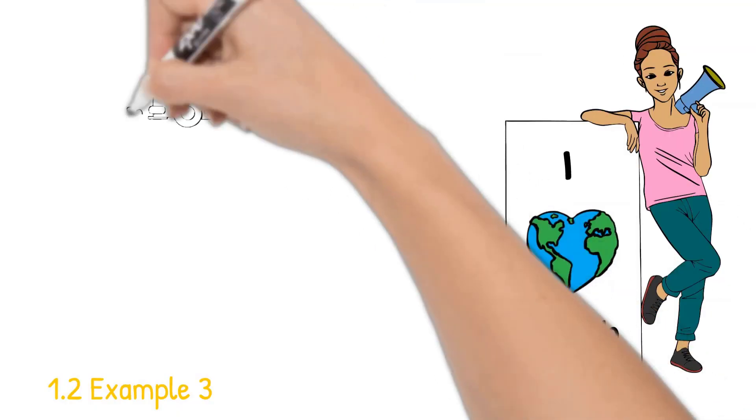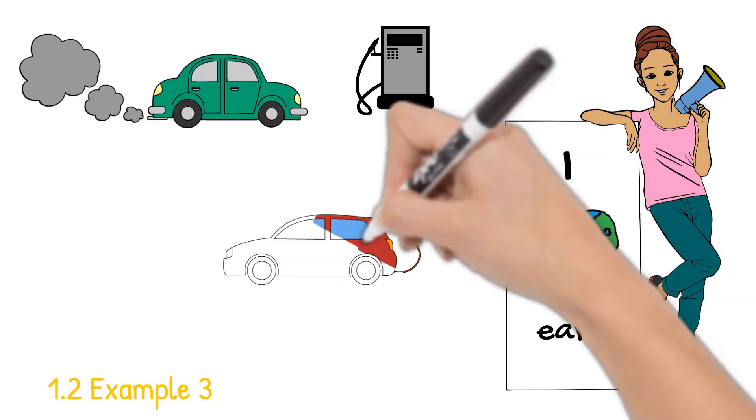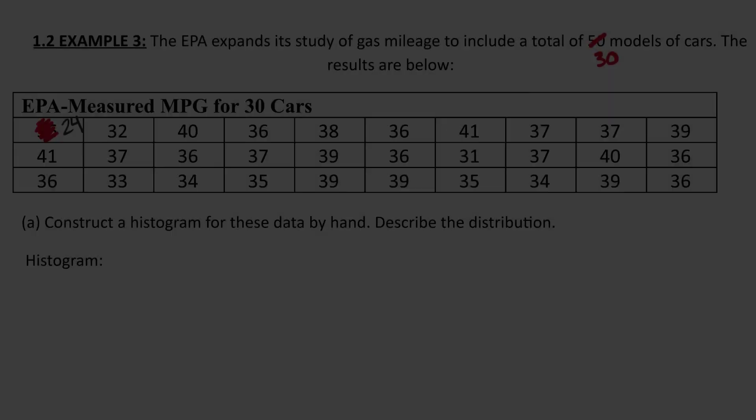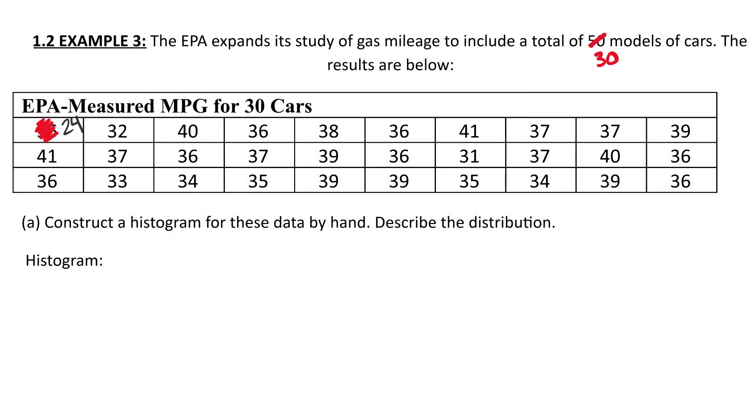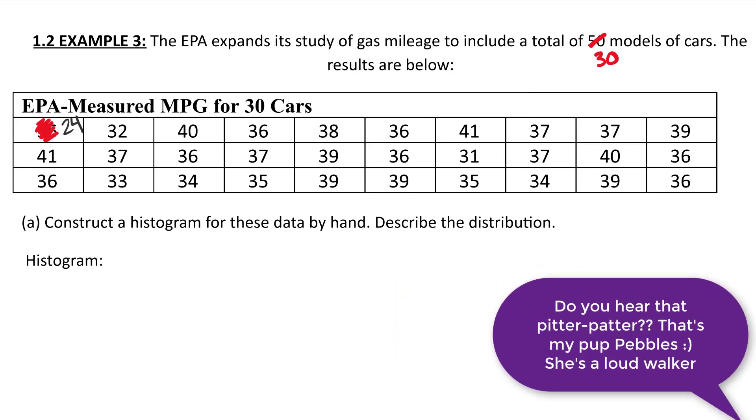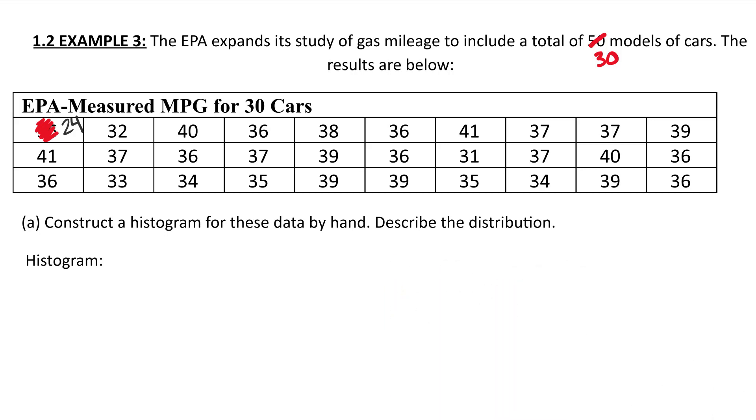So let's get into 1.2 example 3 back to the EPA data on gas mileage for cars. So now our data set is going to include 30 cars. Double check your notes. And again, that one typo carried through. Make sure that's a 24 for your first data value. We're going to construct a histogram today with our calculator. You can absolutely do this with just sorting your data like we learned in the last lesson and doing this by hand. And whatever you're most confident with, I say go with that. But you will always have a calculator in AP stats. And that's what we're going to focus on today, making a histogram on your calculator.